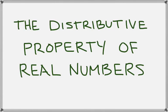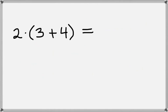This lesson is on the distributive property of real numbers. Let's take 2 times 3 plus 4 in parentheses. Now the first thing we need to do when simplifying this expression is we want to get rid of the parentheses.